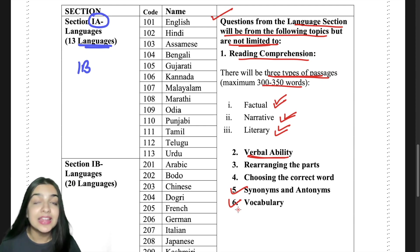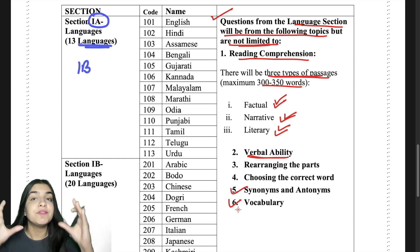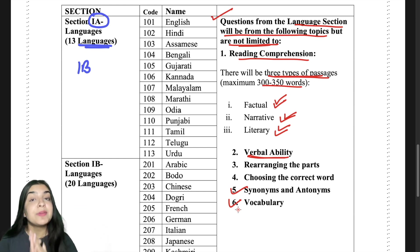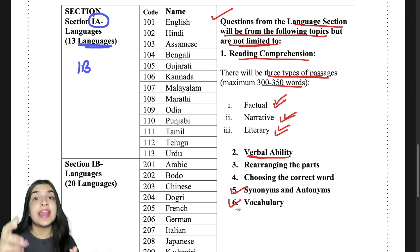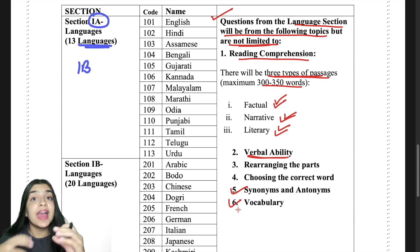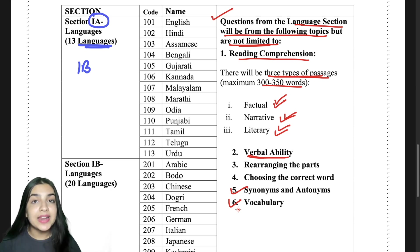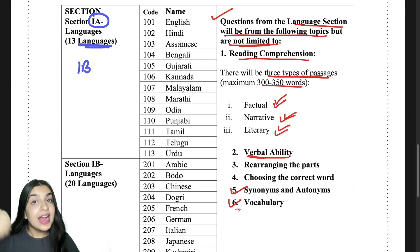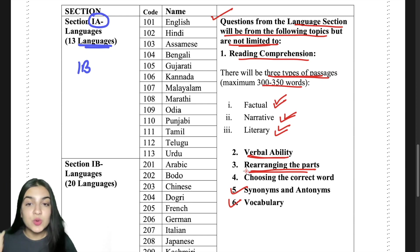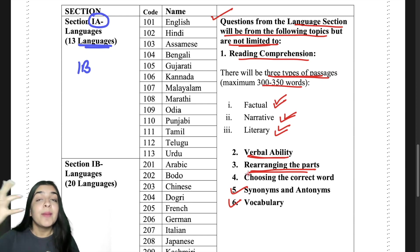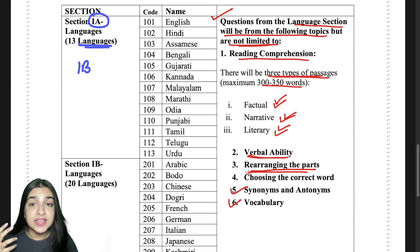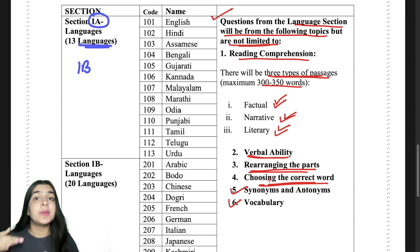The core idea of verbal ability is that you are able to understand the language and express it in your own way — for example, replacing a word with a suitable alternative. Other question types include rearranging parts of sentences and jumbled sentences. Many questions involve choosing the correct word or replacing a word — these fall under the overall verbal ability section.